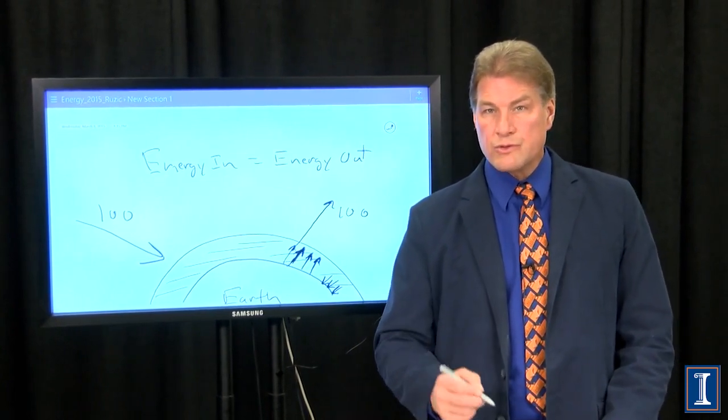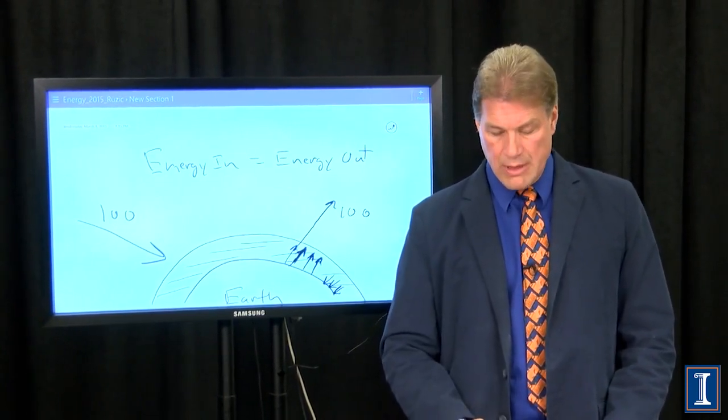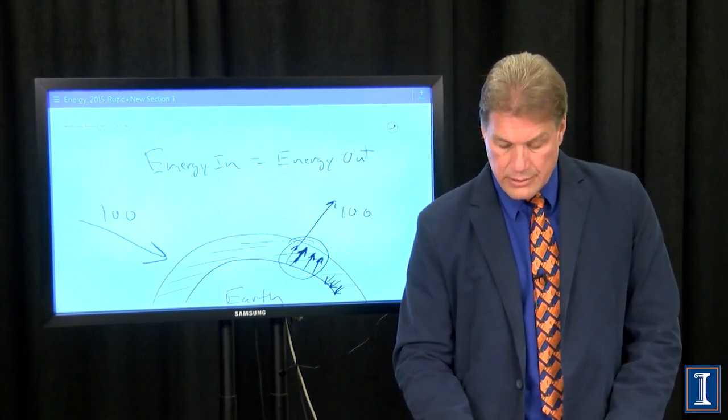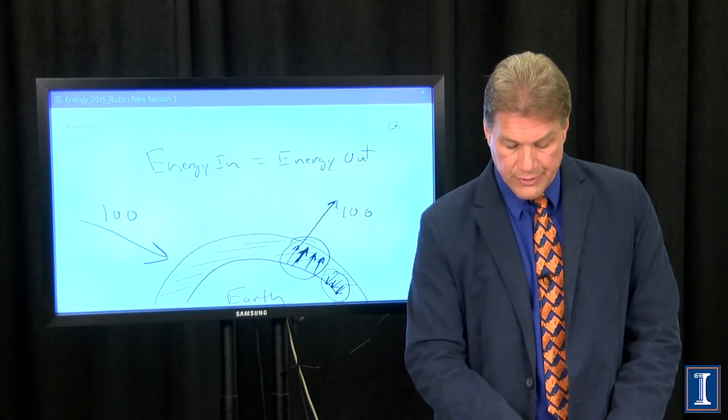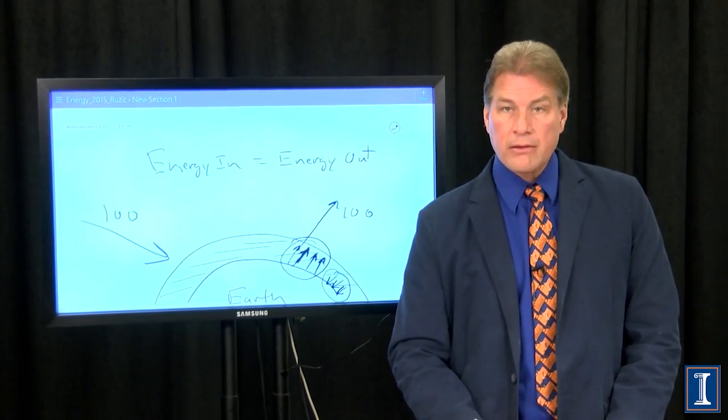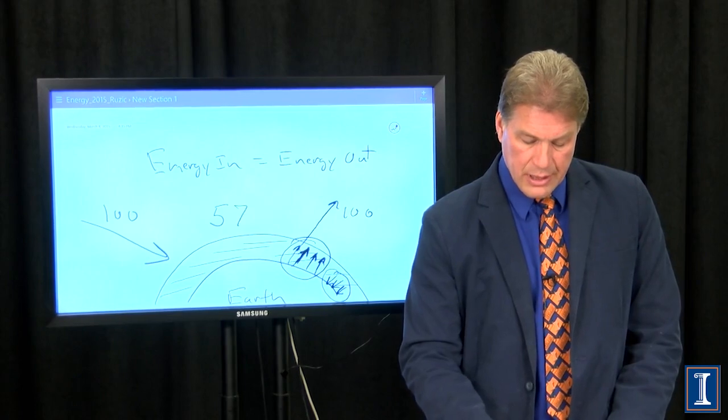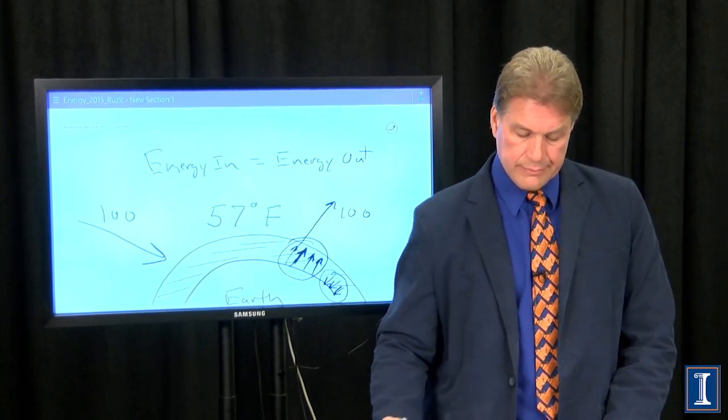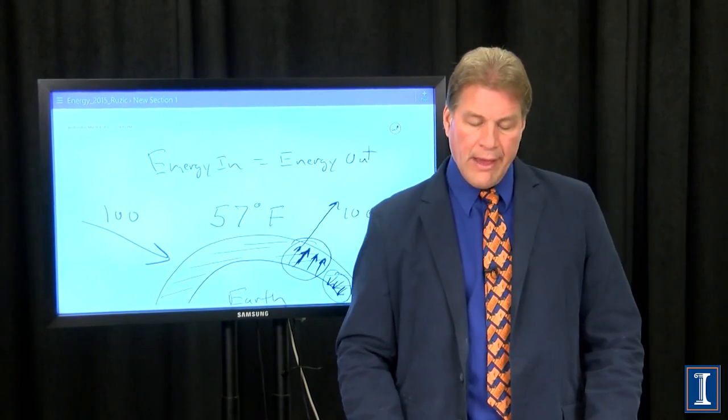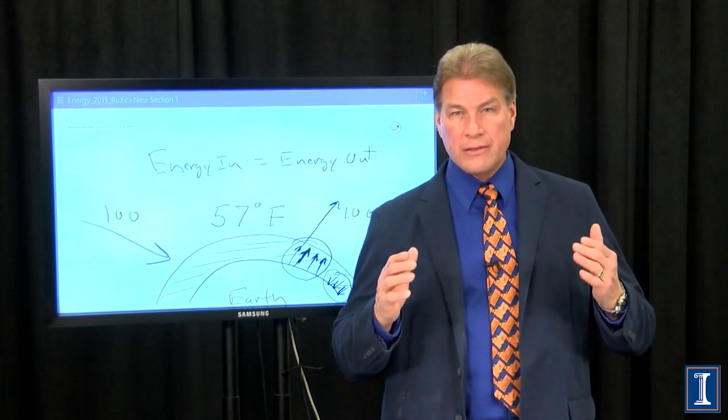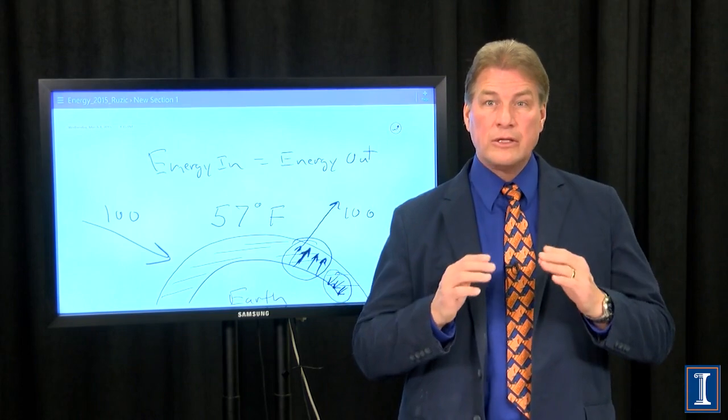But the Earth has warmed up considerably because it's actually radiating a much larger amount since everything except for this 100 is coming back. The average temperature of our planet actually is 57 degrees Fahrenheit. You can understand here what happens now if we make the blanket, we make the insulator a little bit better.